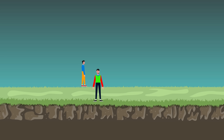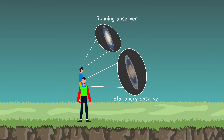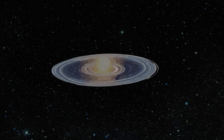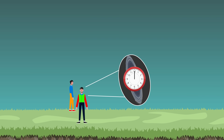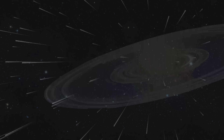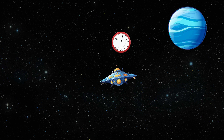Two observers next to each other — one moving and one stationary — are both going to see the Andromeda galaxy differently because simultaneity is relative, and those two observers see the galaxy at different times. So if I put a large clock into the Andromeda galaxy, one observer would see one reading and the other observer would see a different reading.